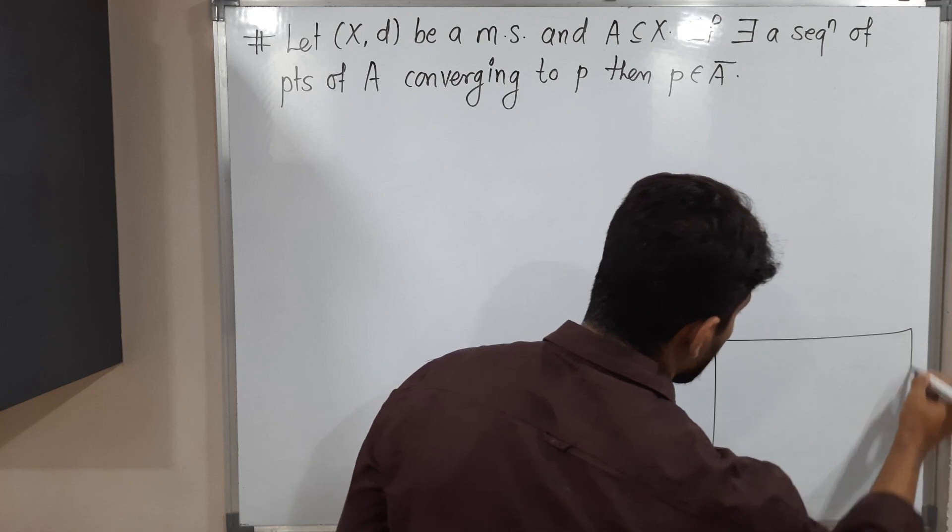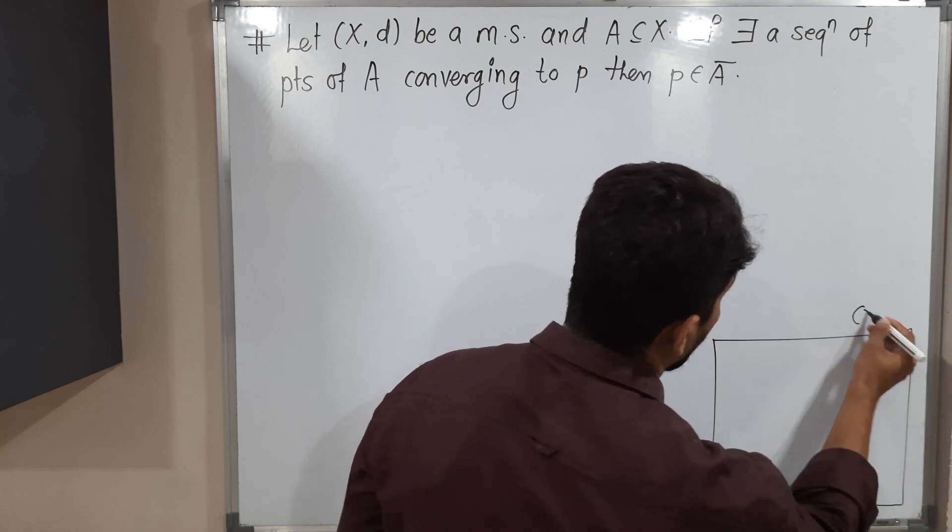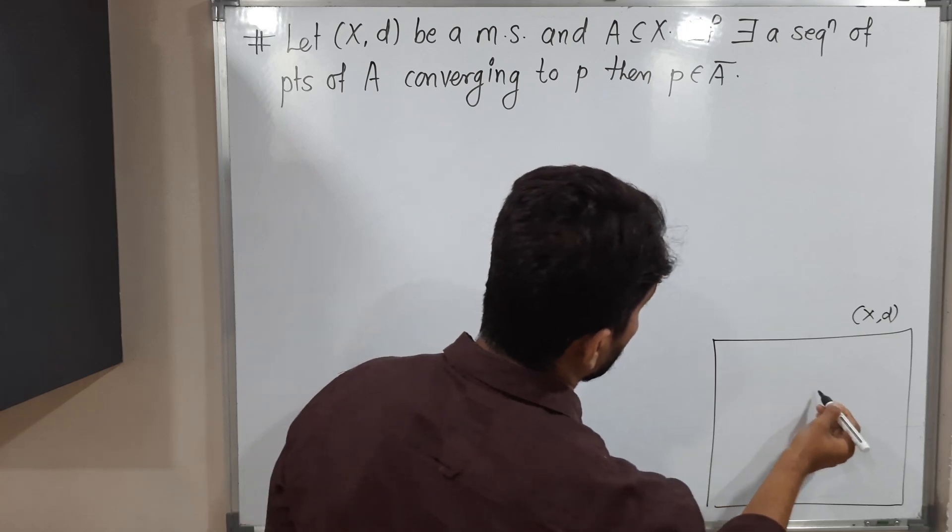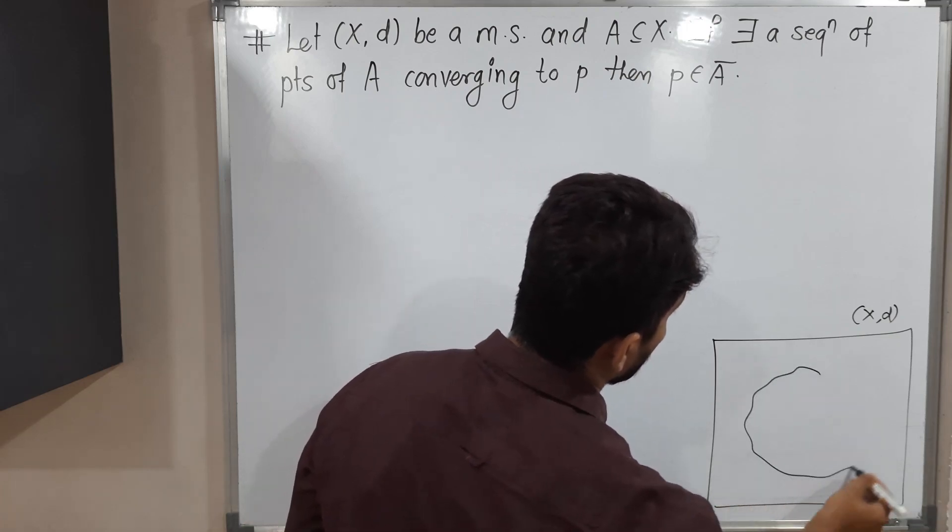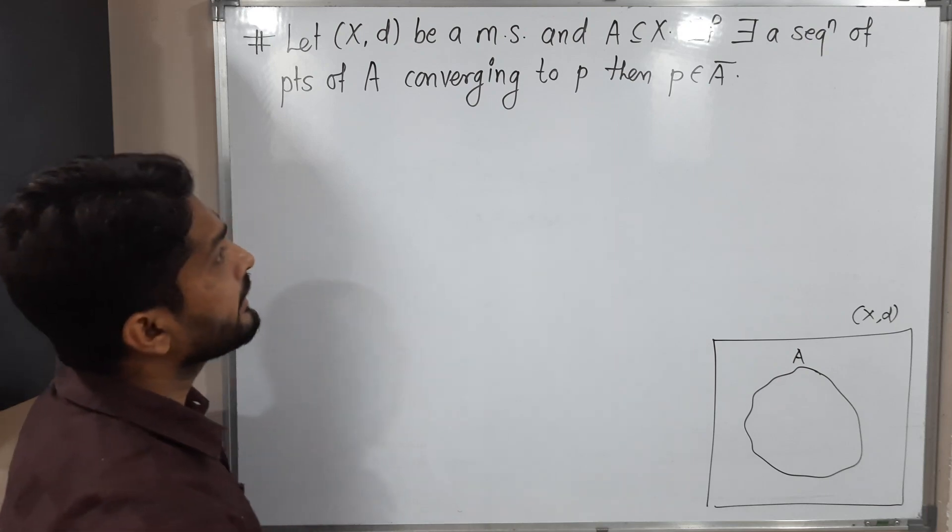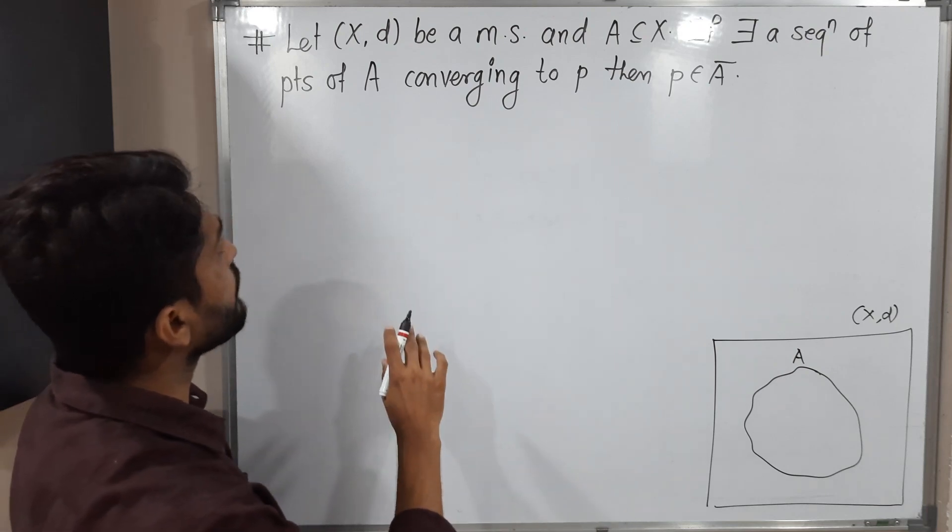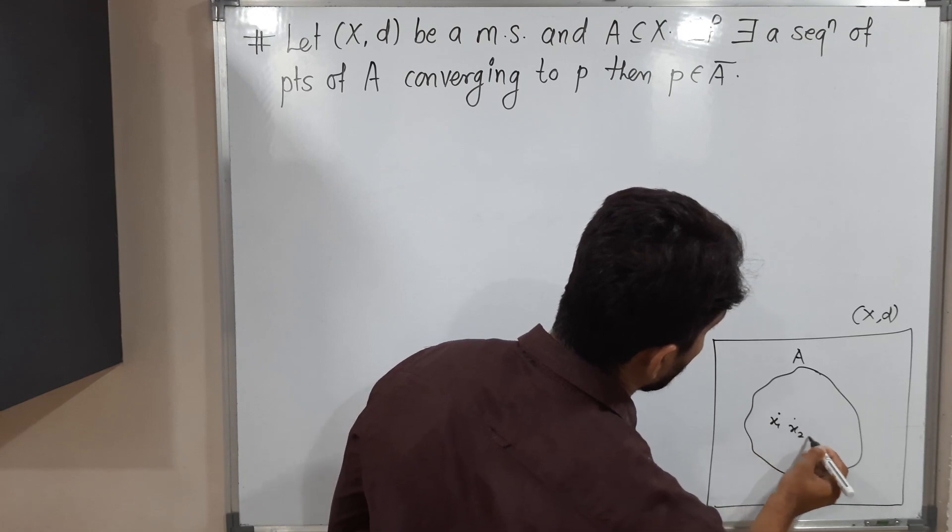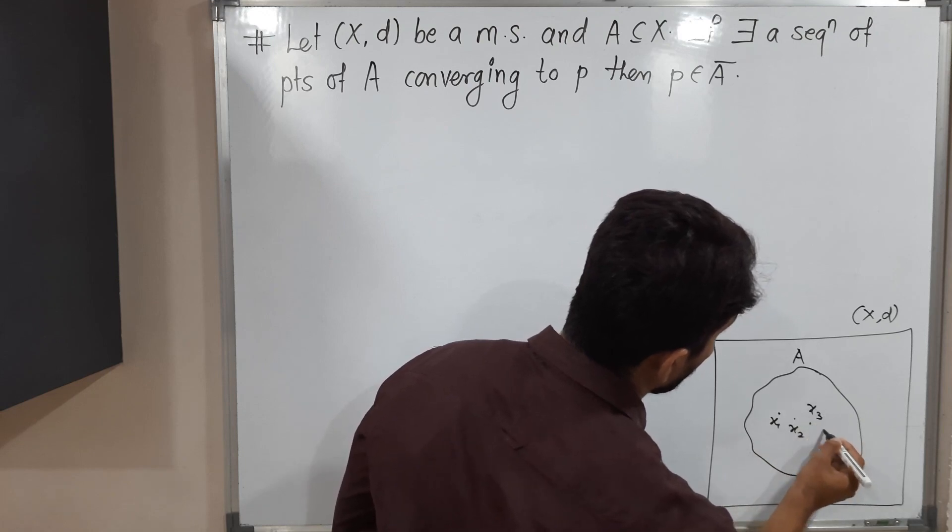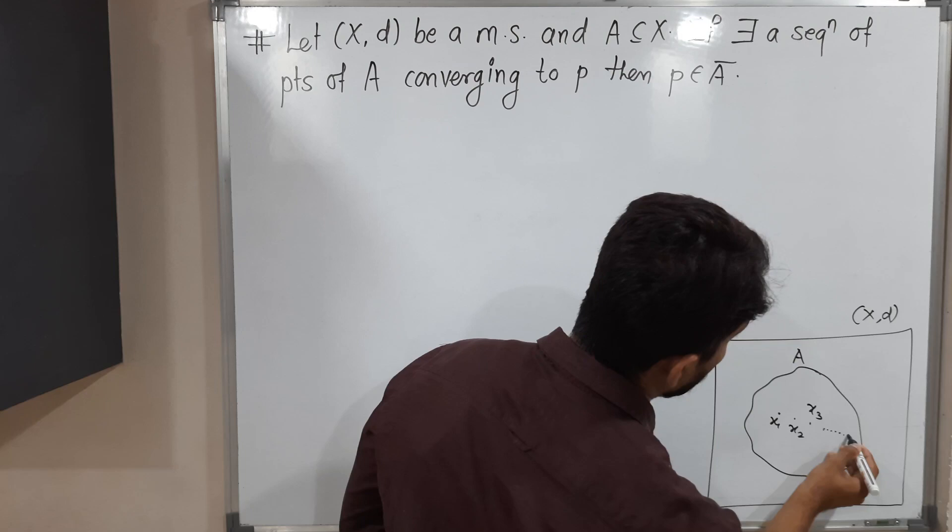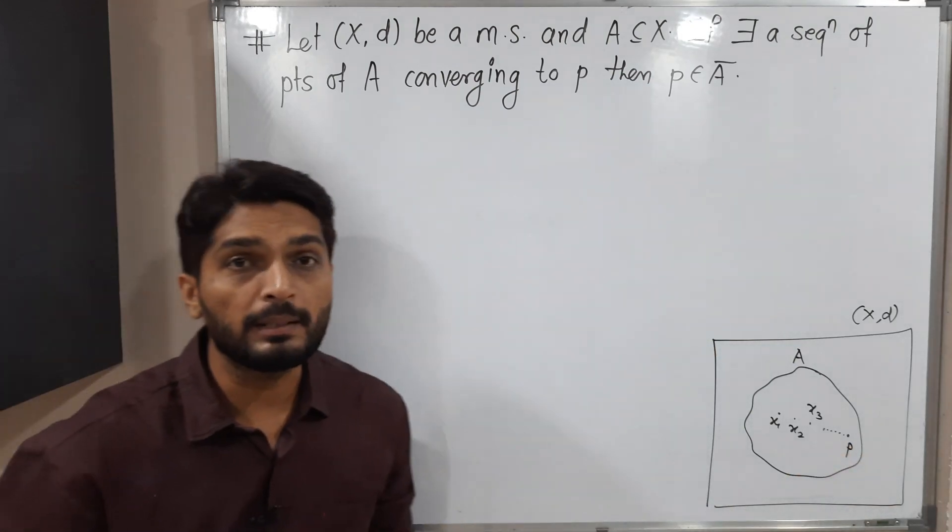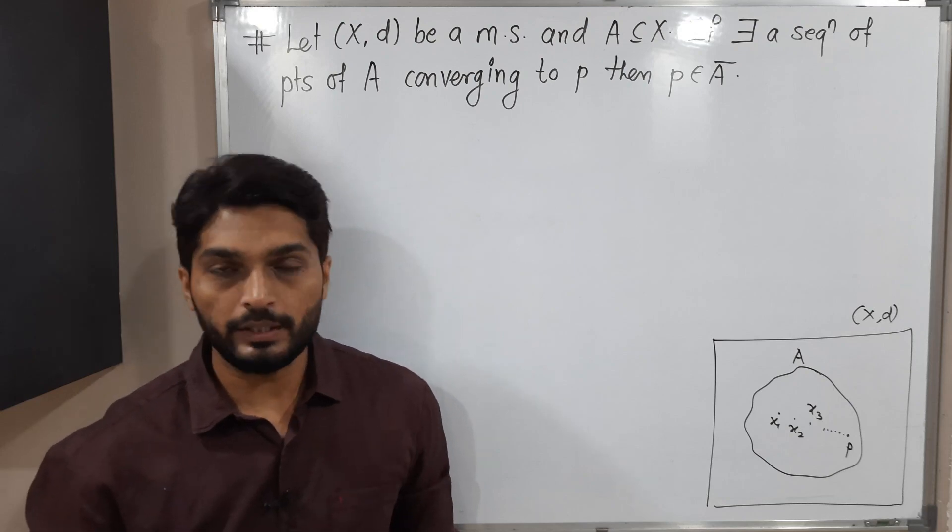Suppose this is a matrix space X,d. We have a set A. And there exists a sequence of points of A converging to P. Suppose there is a sequence x1, x2, x3, x4 and so on. So that sequence converges to point P. Then we have to prove that P belongs to A bar.